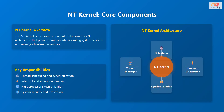The NT kernel is the core of the Windows NT architecture, providing fundamental operating system services and managing hardware resources. Its key responsibilities include thread scheduling and synchronization, interrupt and exception handling, multiprocessor synchronization, and system security and protection. Around the NT kernel are the scheduler, which manages thread execution; the interrupt dispatcher, which handles hardware and software interrupts; the synchronization manager, which ensures proper access to shared resources; and the thread manager, which creates, manages, and terminates threads. These components are essential for the real-time operation of the operating system.